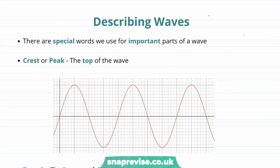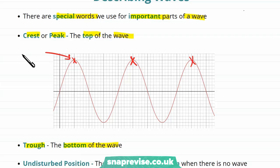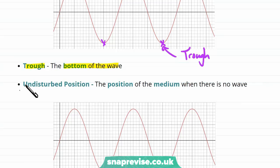We're going to start being more precise about waves now, using special words for the important parts of a wave. We'll start with the crest or the peak — this is the top of the wave. There are a number of crests or peaks on our graph. The bottom of the wave is referred to as the trough. Now, we also have a word for where the water would be if there was no ripple — we call this the undisturbed position.